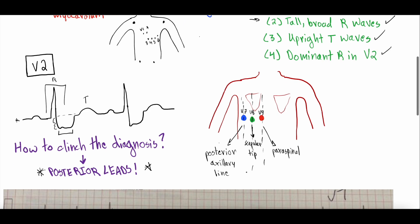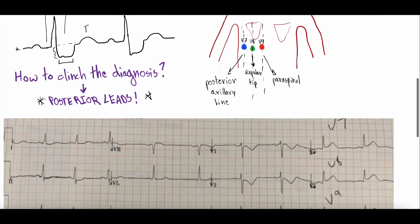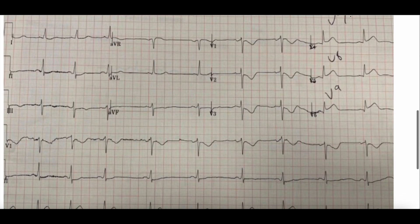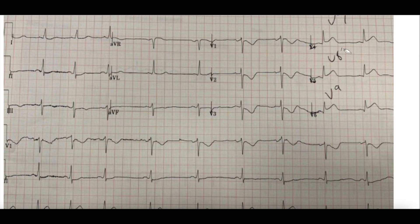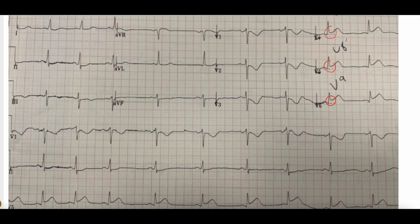This is an actual 12-lead ECG from a real patient — details withheld for HIPAA protection. The 12 leads are labeled, and you can see V7, V8, and V9 identified. Looking at the isoelectric lines in each of those leads, you can see ST elevations in all three posterior leads.